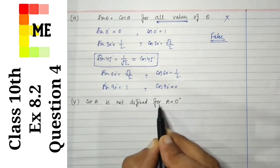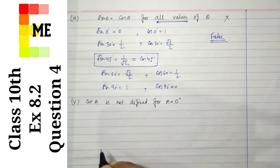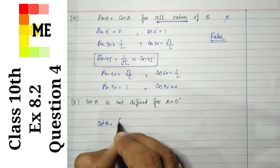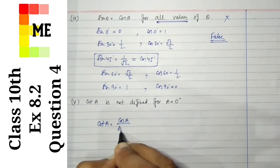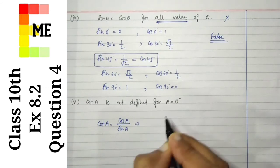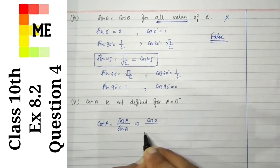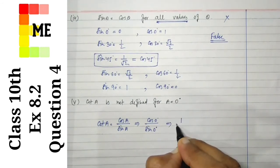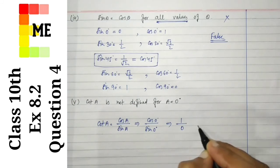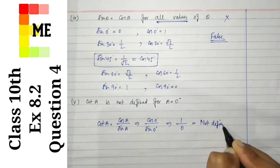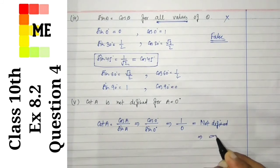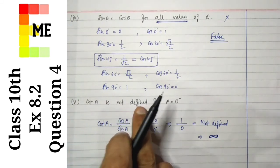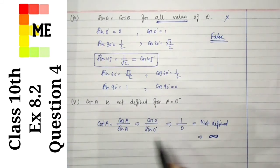Part 5 says cot A is not defined for A = 0°. Let's check: cot A can be written as cos A upon sin A. Putting A = 0°, we get cos 0° / sin 0° = 1/0, which is not defined — this can also be written as infinity, which is not defined. So cot A is not defined for A = 0° is true.